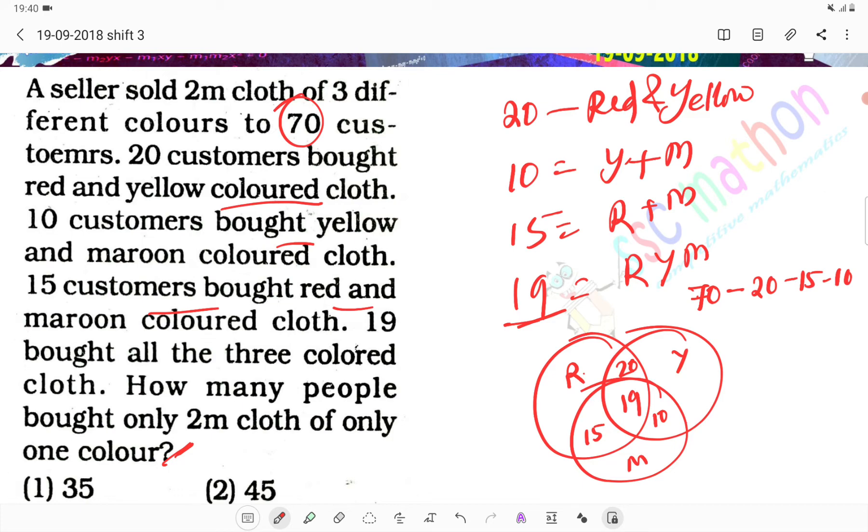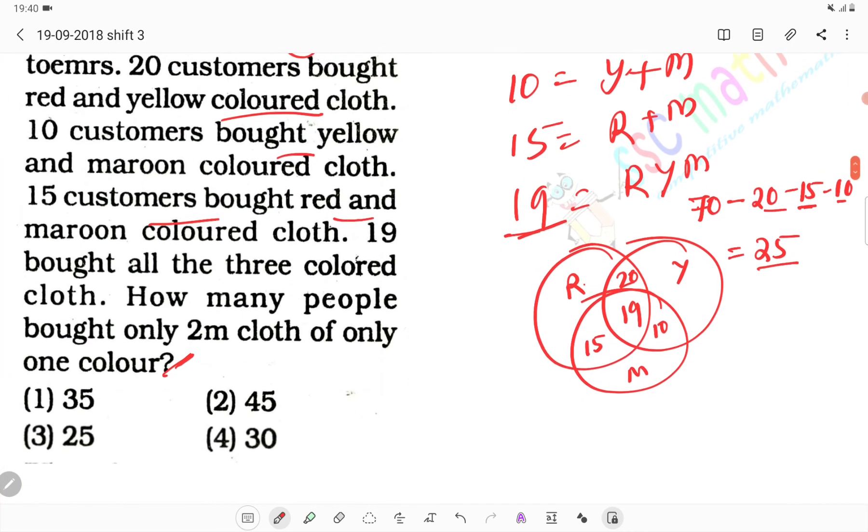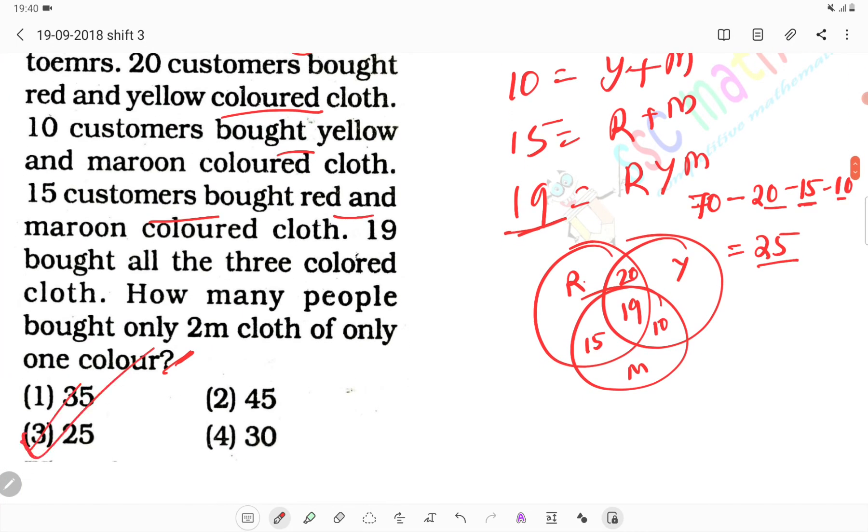So here, 20, 30, 45, 45, 50. Out of 70, 20, so 25 customers bought only one color. Only one color. Option number 3 is the correct answer.